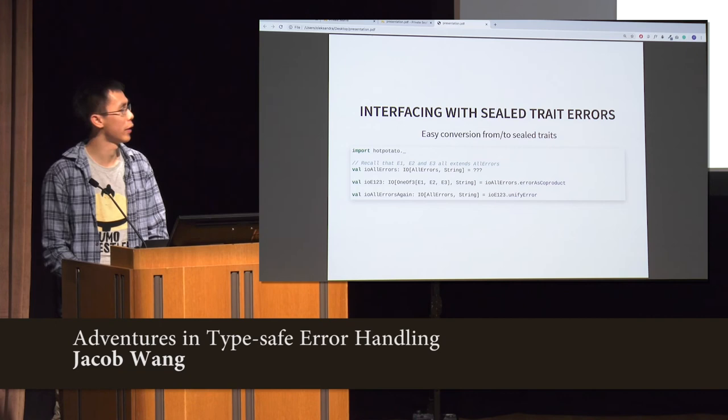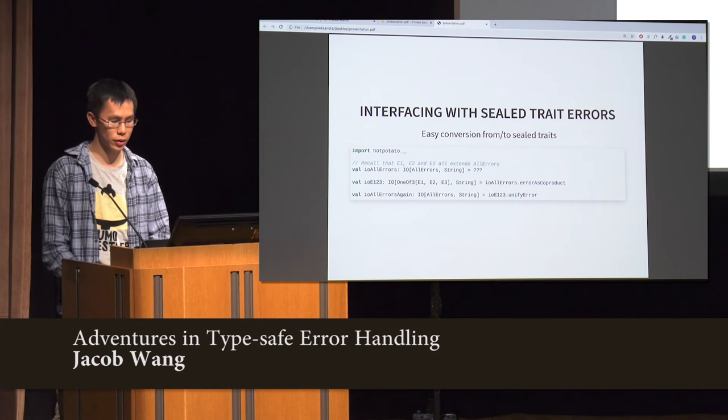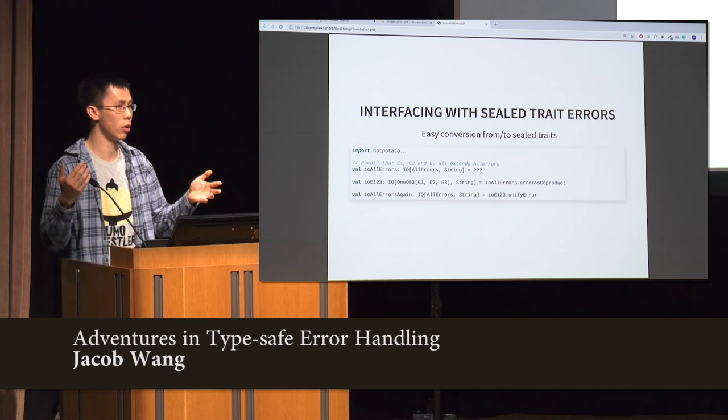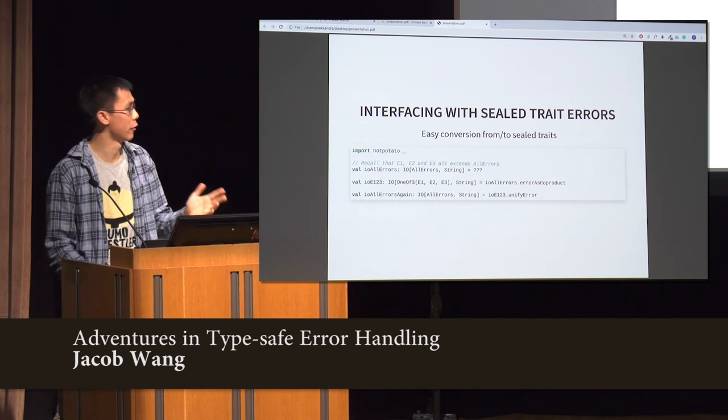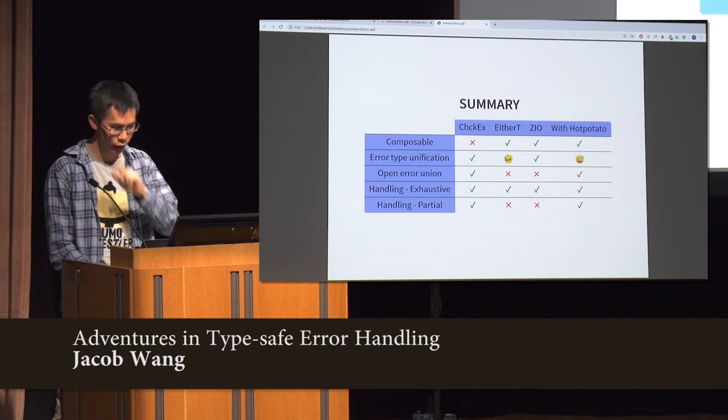Sealed traits are still cool for error handling — don't worry. You can convert freely between sealed traits and coproducts, and you can convert back as well. Or if you have a bunch of errors that all belong to Throwable, you can call unifyError to say I don't care what they are, they're all Throwable. But be careful because when you do that, you're throwing away their type information.